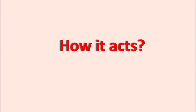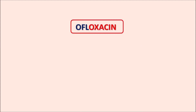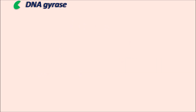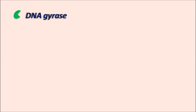Now let us see how this drug acts. Ofloxacin, being a fluoroquinolone, acts on topoisomerase enzymes. This drug is effective against topoisomerase 2, commonly known as DNA gyrase, as well as topoisomerase 4. These two enzymes are responsible for DNA replication by relieving topological strain in the DNA strands, and both are blocked by ofloxacin. DNA gyrase acts on the DNA coil which has a positive supercoil — not ready for replication.